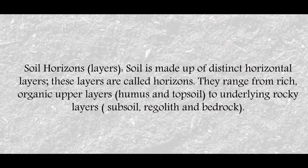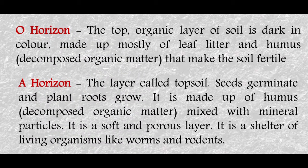Soil is made up of different horizontal layers called horizons, arranged from the top humus layer down to the bedrock. The topmost organic layer of soil is dark in color, made up mostly of leaf litter and humus — decomposed organic material. This first layer is called the O-horizon, and it is one of the most important layers where humus is produced from dead and decaying organisms. It is a very fertile layer also called topsoil.